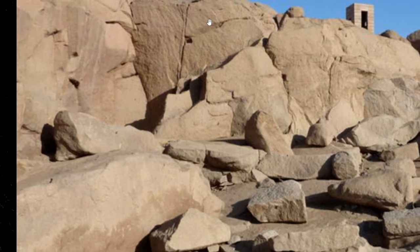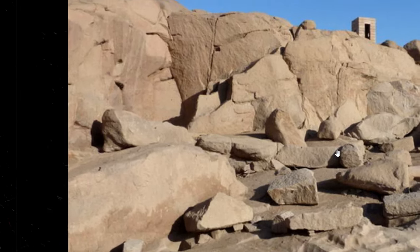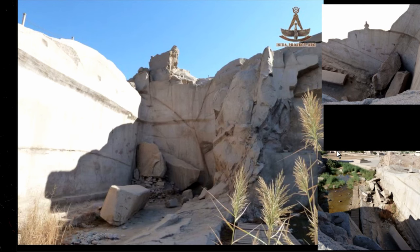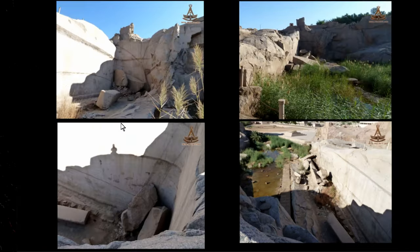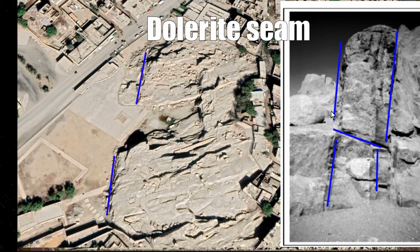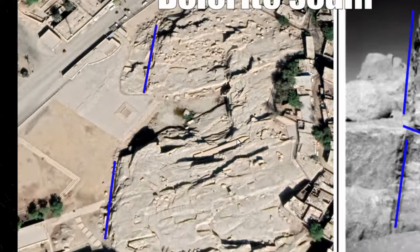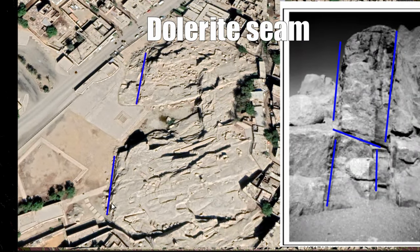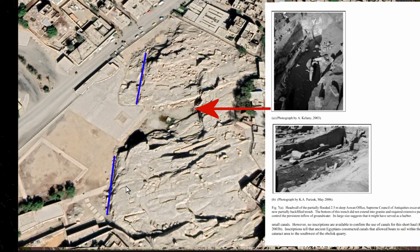At the Aswan quarry you can see natural fractures all over the place — that's what you need to look out for. You want to avoid them, but also take advantage of them as much as possible. There's the unfinished obelisk, and these blue lines indicate a natural dolerite seam — that's where those pounding stones can be found. They didn't need to be imported from far away; they're actually exported from here to other quarries because it's a very good tool.